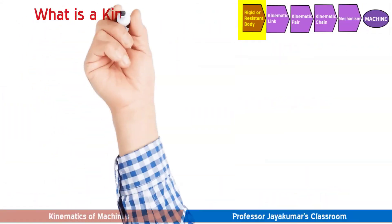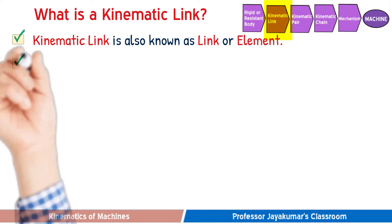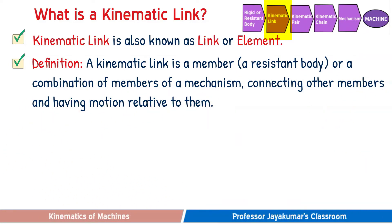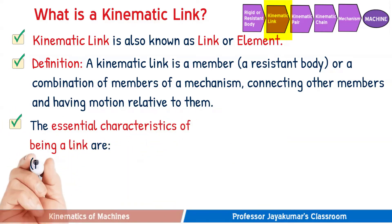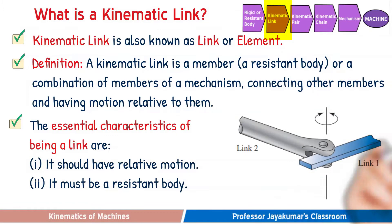A kinematic link is also known simply as a link or an element. It is a member or combination of members of a mechanism that connects other members and has relative motion between them. The two essential characteristics of any kinematic link are: the link should have relative motion, and it must be a resistant body. For example, if both link one and link two are fixed, then neither can be called a kinematic link — there must be relative motion between the connecting members.